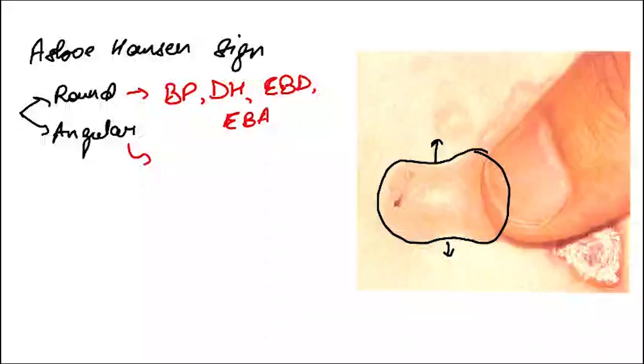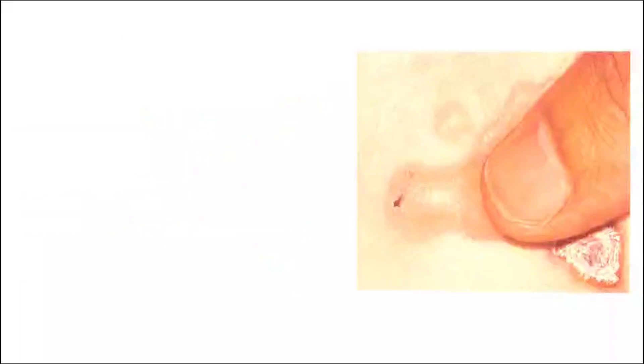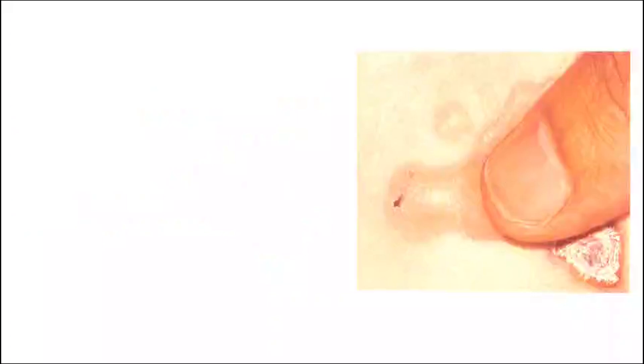If the extension is angular, we have a diagnosis of pemphigus vulgaris. Here I will also tell you about Bulla spread sign, also known as Lutz sign, which is almost the same as Asbo Hansen sign. The difference is that instead of putting pressure from the top of the blister, pressure is put from the side of the blister. The causes are the same as Asbo Hansen sign.